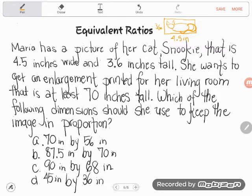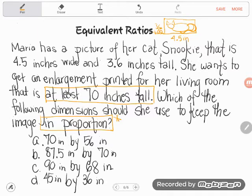Okay, so what are they asking us to do or to find? Well, two things. We're going to blow this sucker up and we want it to be at least 70 inches tall. At least 70 inches tall. So right now, how tall is it? It's 3.6 inches tall. We're going to blow that sucker way, way up if we're going to get it to 70 inches tall. And we want to keep those enlargements in proportion. And this is really the key word here that tells me what I'm doing for this.